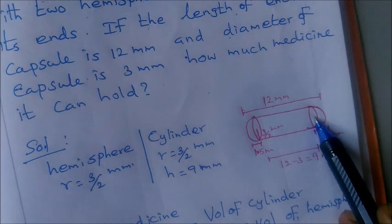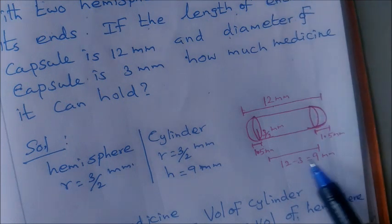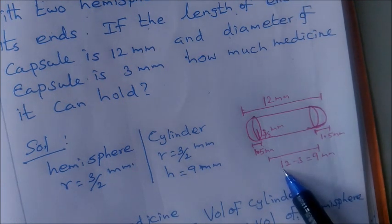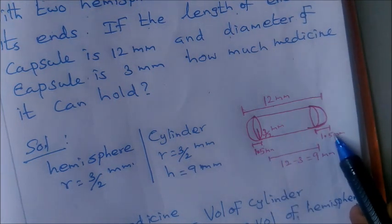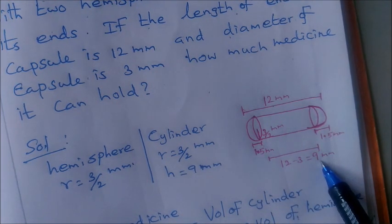This is the radius and this is the height. The cylinder height - the total length is 12 mm. So 12 mm minus 1.5, 1.5, which is 3 mm total for the hemispheres, balance is 9 mm.